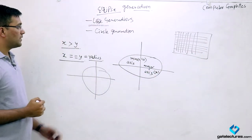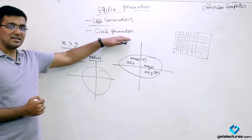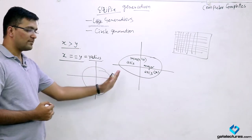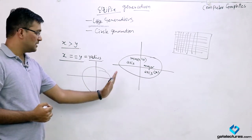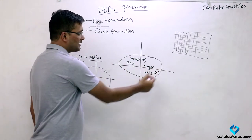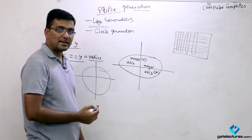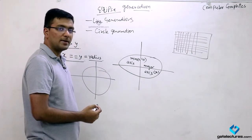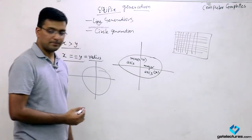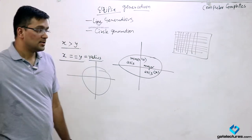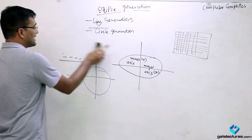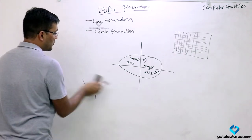We have seen how to generate a circle, so our algorithm is very much similar. In the same way we will be seeing how ellipses will be drawn on the computer graphics screen. Let us see a few properties of this ellipse before we move on.